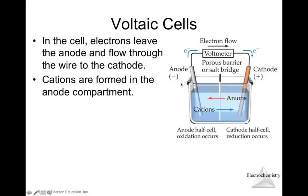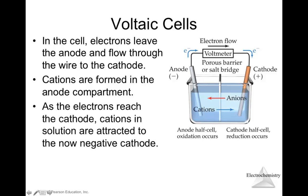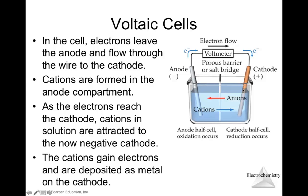Cations are formed in the anode compartment because removing electrons produces positive species. As electrons reach the cathode, cations in solution are attracted to the now-negative cathode. The cations gain electrons and are deposited as metal on the cathode. The zinc solid produces Zn²⁺ through oxidation, and the Cu²⁺ in solution is reduced to copper solid deposited on the cathode.